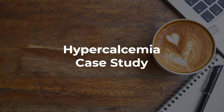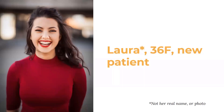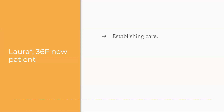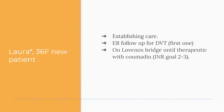This is the hypercalcemia case study. We're going to start with Laura — she's 36 years old, a new patient to the clinic. PHI has been removed; this is not her real name or photo. Laura is a 36-year-old female here to establish care, coming from a different clinic. She's actually here for an ER follow-up — she had a DVT, her first one ever. She's on a Lovenox bridge until she's therapeutic with her Coumadin, with a goal INR of 2 to 3.